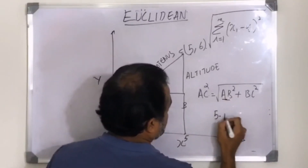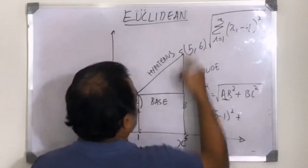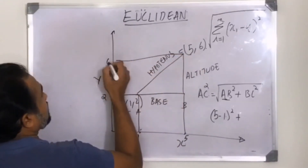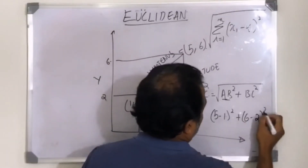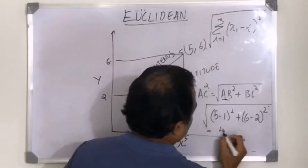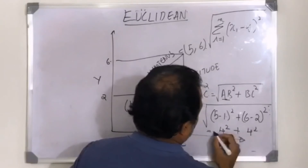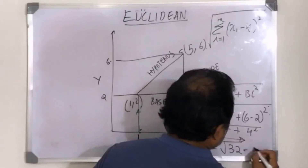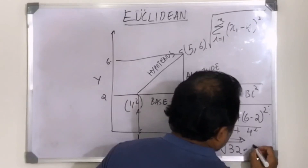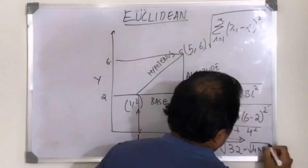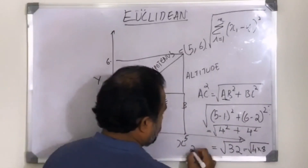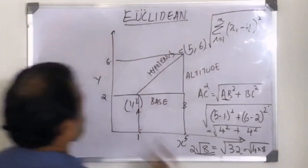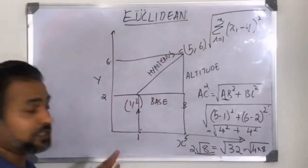Substituting the values: AB = 5 − 1 = 4, so AB² = 16. BC = 6 − 2 = 4, so BC² = 16. The Euclidean distance is the square root of (16 + 16) = √32, which can be written as 4√2. That is the Euclidean distance between points (1,2) and (5,6).